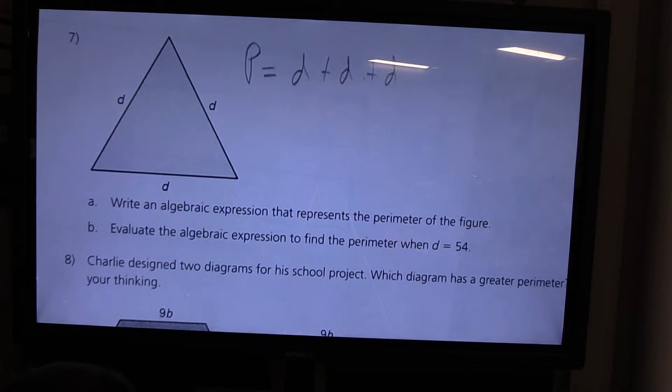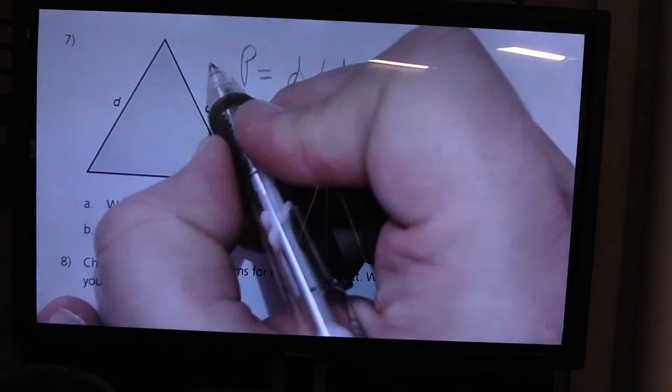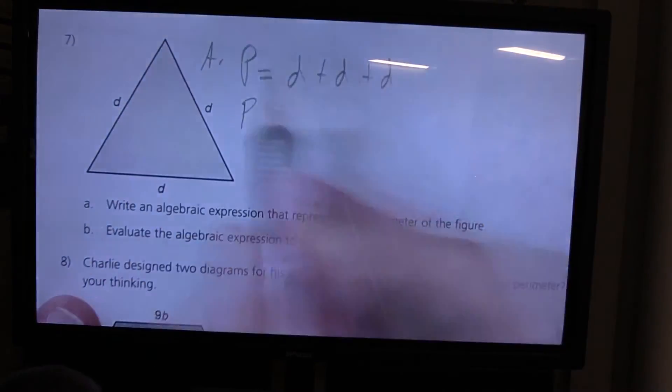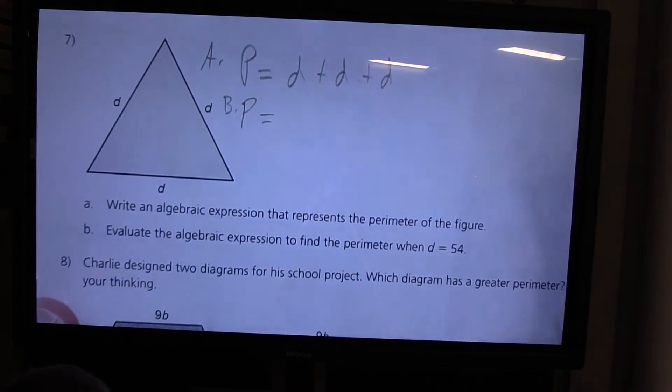Now part B says evaluate the algebraic expression to find the perimeter when D equals 54. So I'm going to go ahead and replace all those D's, and this is part A by the way, and this is part B. I'm going to replace all those D's with 54.